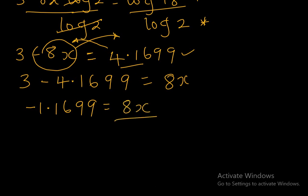To get the value of x, you simply divide both sides by 8. x equals minus 1.1699 divided by 8, which gives us minus 0.1462.